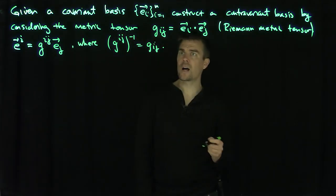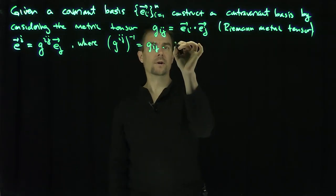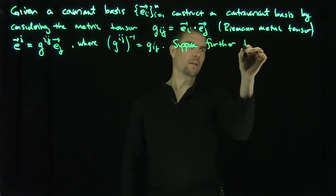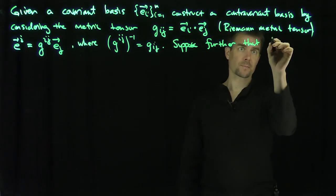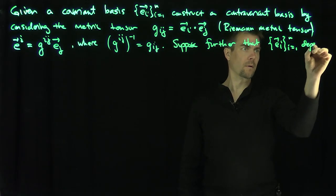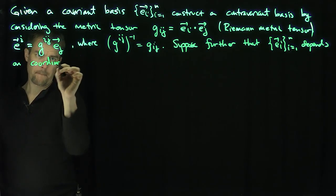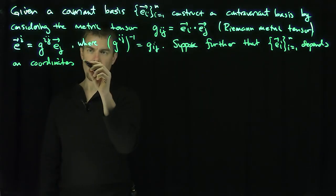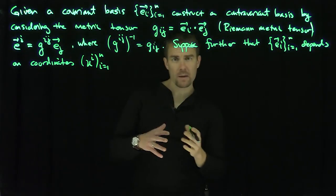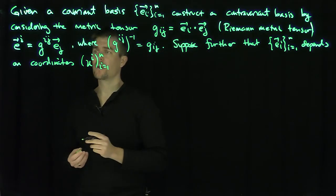So I have a covariant basis. Now what I want to do: suppose that this covariant basis actually comes from an underlying set of coordinates. Suppose further that the covariant basis e_i depends on coordinates u^i, where i goes from 1 to n. These coordinates may be orthogonal curvilinear coordinates, or they may be just general coordinates — they need not be orthogonal.